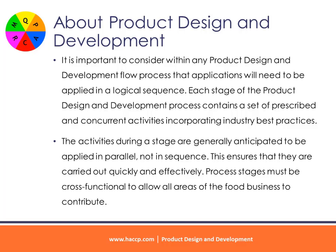Each stage of the product design and development process contains a set of prescribed and concurrent activities incorporating industry best practices. The activities during a stage are generally anticipated to be applied in parallel, not in sequence. This ensures that they are carried out quickly and effectively. Process stages must be cross-functional to allow all areas of the food business to contribute.